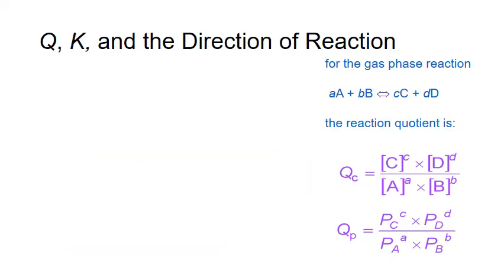So how can comparing Q to K tell us the direction of the reaction? There are three scenarios: Q can equal K, Q can be less than K, or Q can be greater than K.